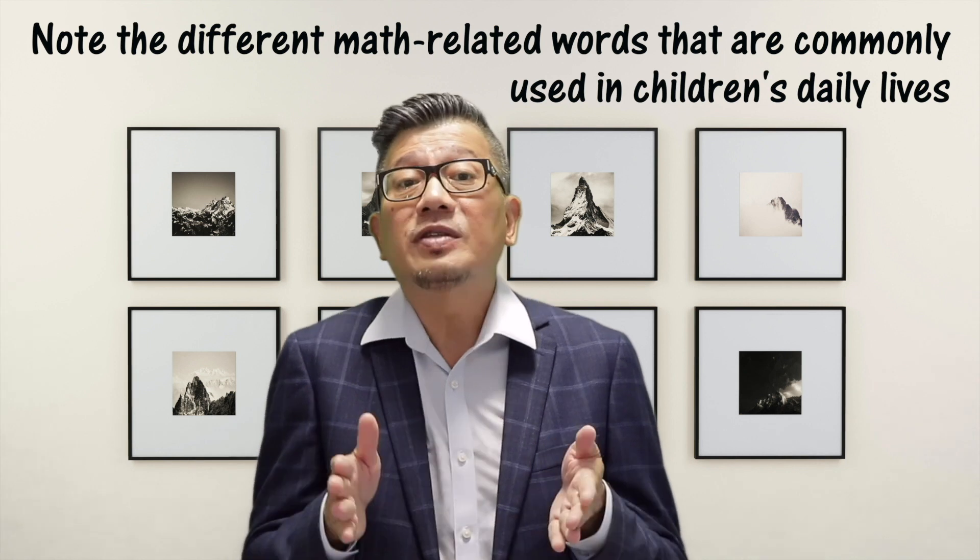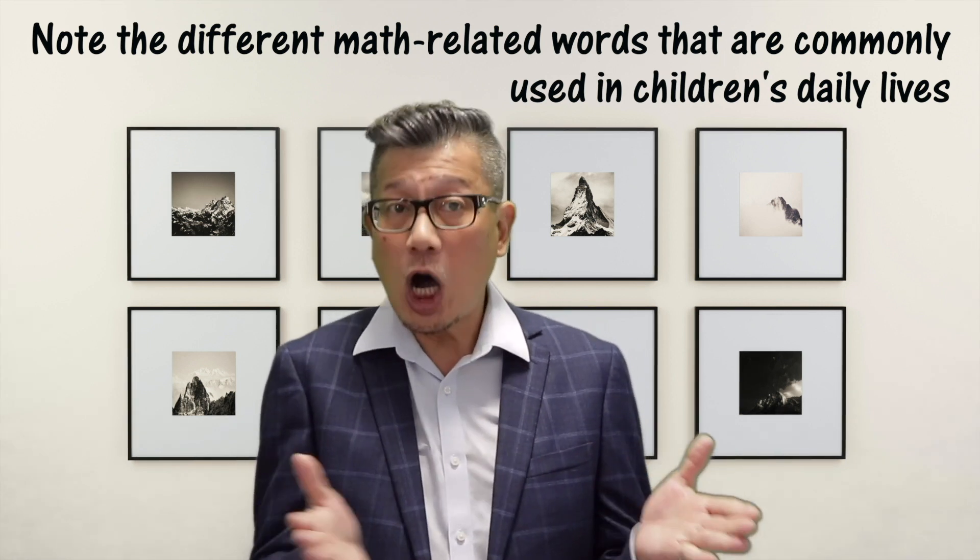Children demonstrate innate abilities to learn and understand language at a very young age. Since math is in the language, adults should maximize the window of opportunities to engage children actively in math talk to help them learn numeracy. To have meaningful math talk, adults can actively take note of the different math-related words commonly used in children's daily lives and use them during conversations. For example, talking to children about having one nose, two eyes, five fingers, ten toes, and that their legs are longer than their arms — these are concrete conversations that children can relate to.